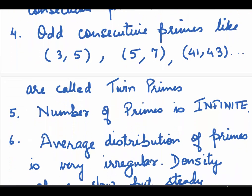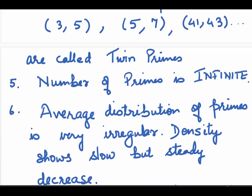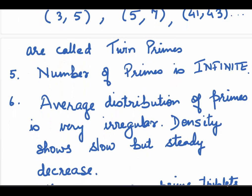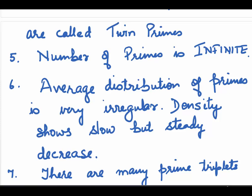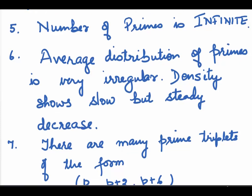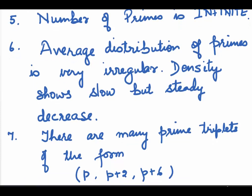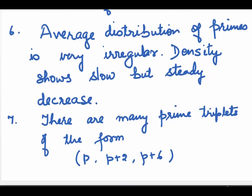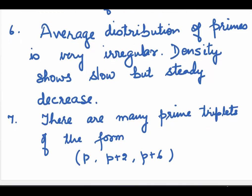Number of primes is infinite. We will do a proof of this. Then, the average distribution of primes is very irregular. If you see on the number line, the density shows slow but steady decrease. Initially on the number line, you will find them quite frequently, but as the size of the numbers increases, we find lesser and lesser primes.